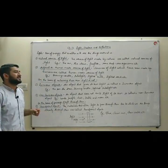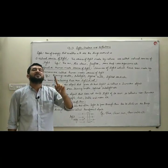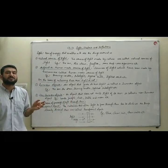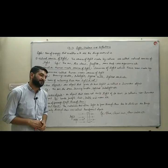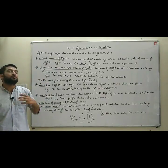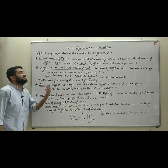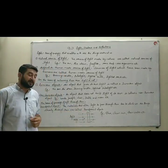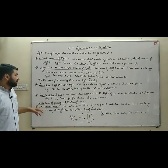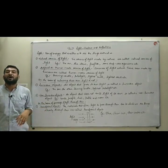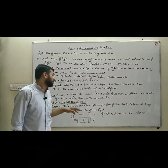The third classification is on the basis of passage of light through them. Objects are of three kinds on this basis. First, transparent objects: objects which allow light to pass through them very easily, so we can see objects through them very clearly. These objects are known as transparent objects — objects which allow light to pass through them and through which we can see things clearly.